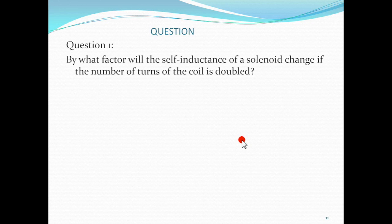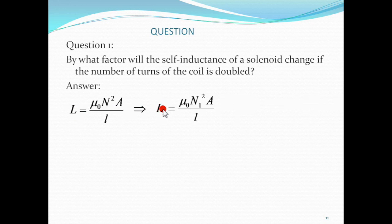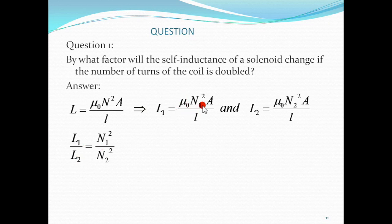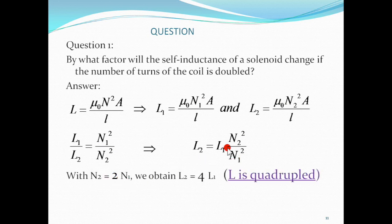Let's answer this question: by what factor will the self-inductance of a solenoid change if the number of turns is doubled? Since L is proportional to N-squared, if we take the ratio L1 over L2 we get N1-squared over N2-squared. Rearranging, L2 equals L1 times (N2 over N1) squared. Given that N2 is two times N1, we get L2 equals four times L1. So when the number of turns is doubled, the self-inductance is quadrupled.